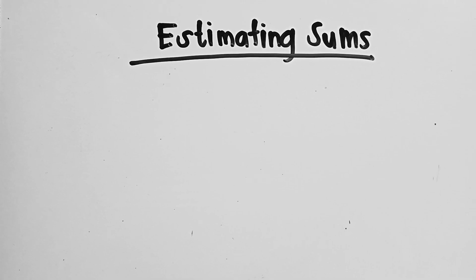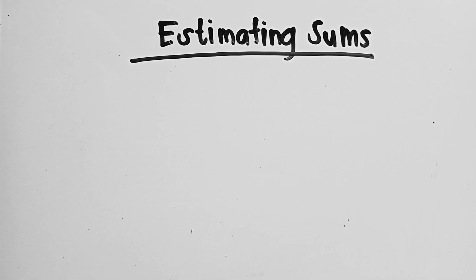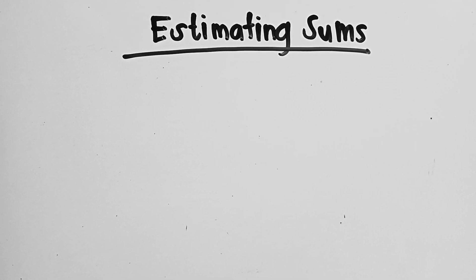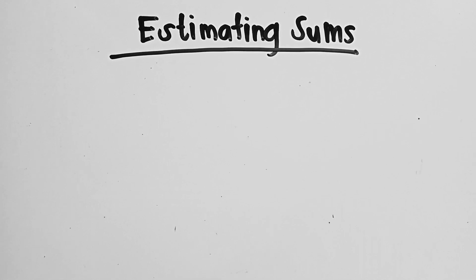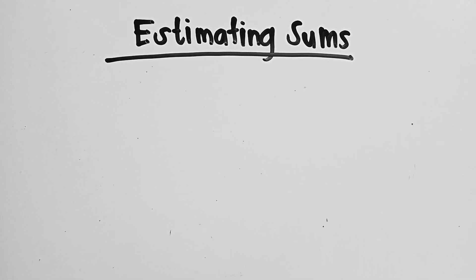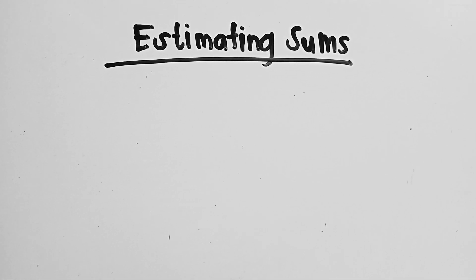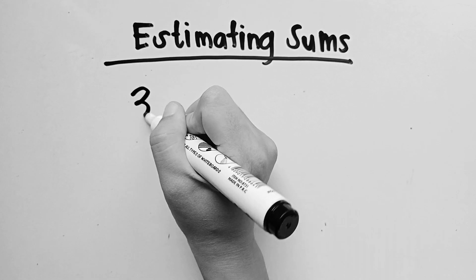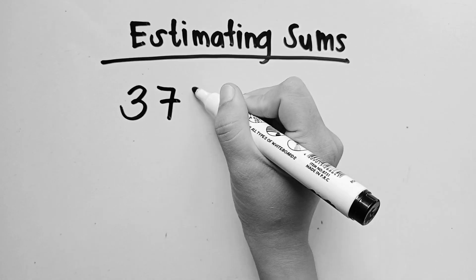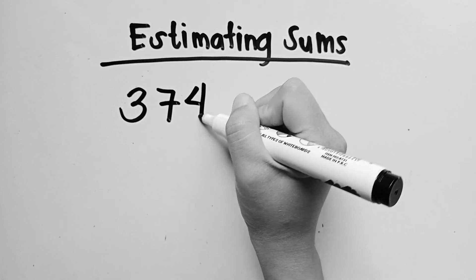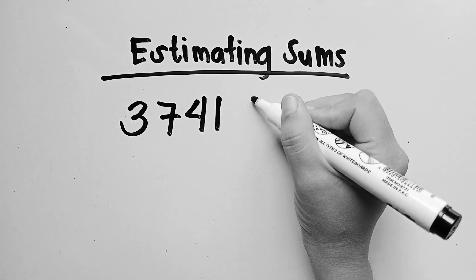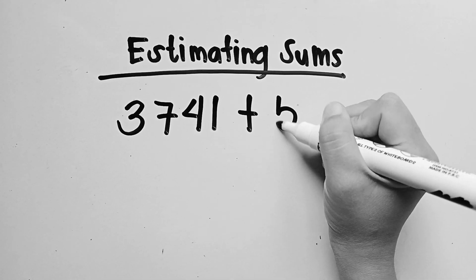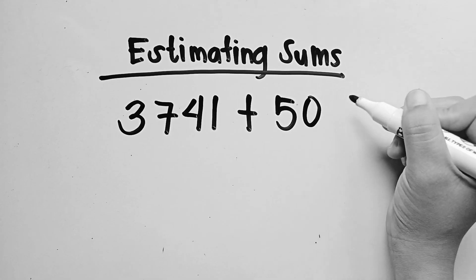So, let's have estimated sums. Use rounded numbers to estimate the sums. Our first example is: give an estimate for the sum of 3,741 and 5,071.